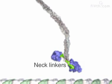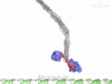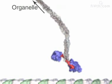In the cell, kinesins pull organelles along microtubule tracks. The organelle attaches to the other end of the long coiled coil that holds the two motor heads together. The organelle is not shown here.